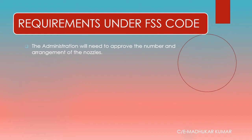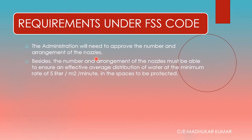As per SOLAS guidelines, the administration needs to approve the number and arrangement of nozzles. Once approved by the administration, the system must be able to ensure the effective average distribution of water at the minimum rate. This rate is important and often asked in MCQs — it is five liters per meter square per minute in the space to be protected.